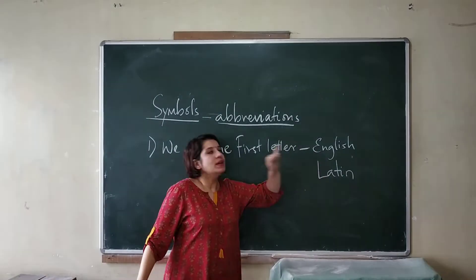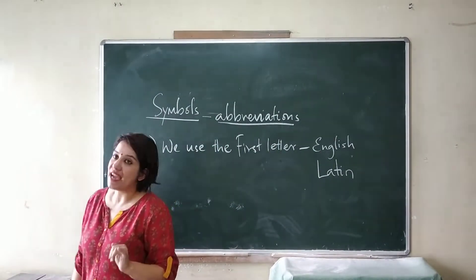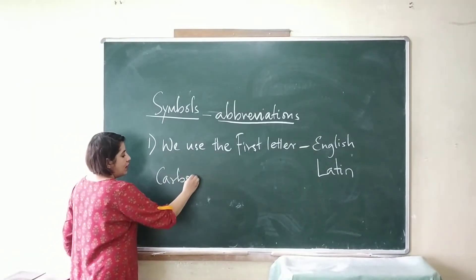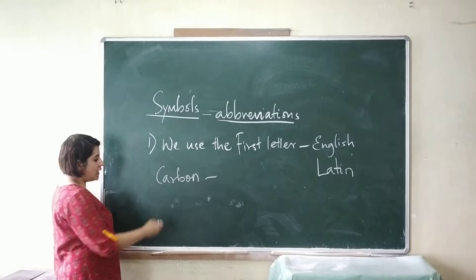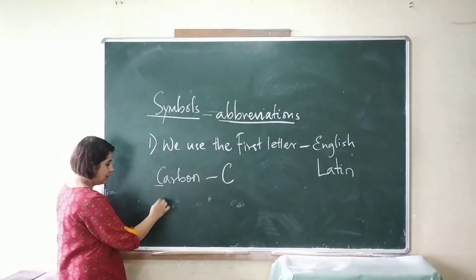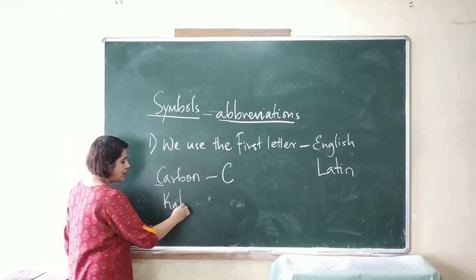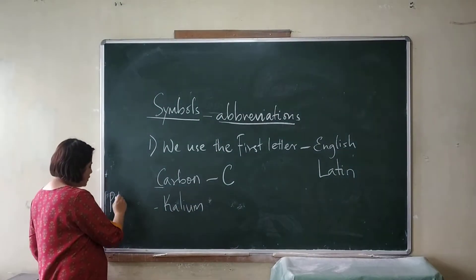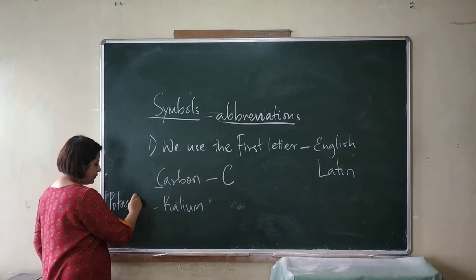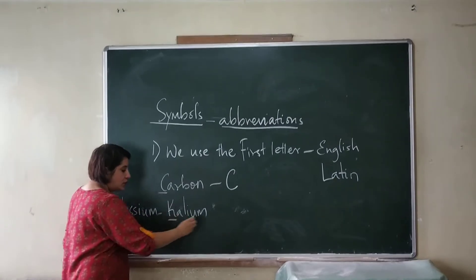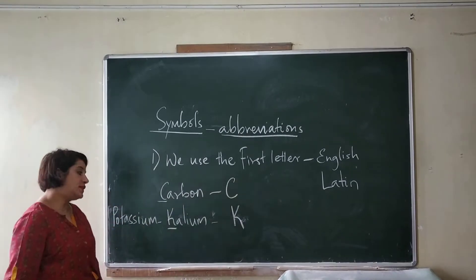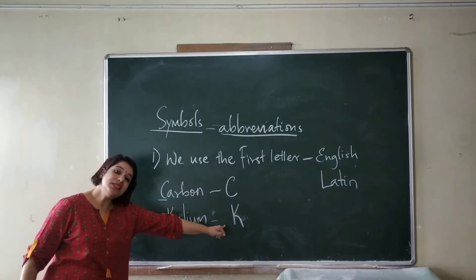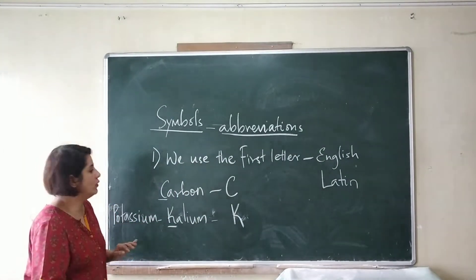For example, carbon is the English name — its symbol is C. Kalium is the Latin name for the element potassium. We use the first letter of this Latin name, K. So the symbol for potassium is K.